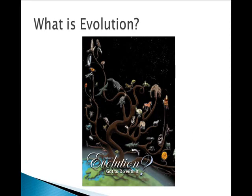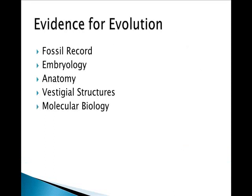Evolution is change over time in a particular species. Some evidence for evolution comes from fossils, embryology, anatomy, vestigial structures, and molecular biology.